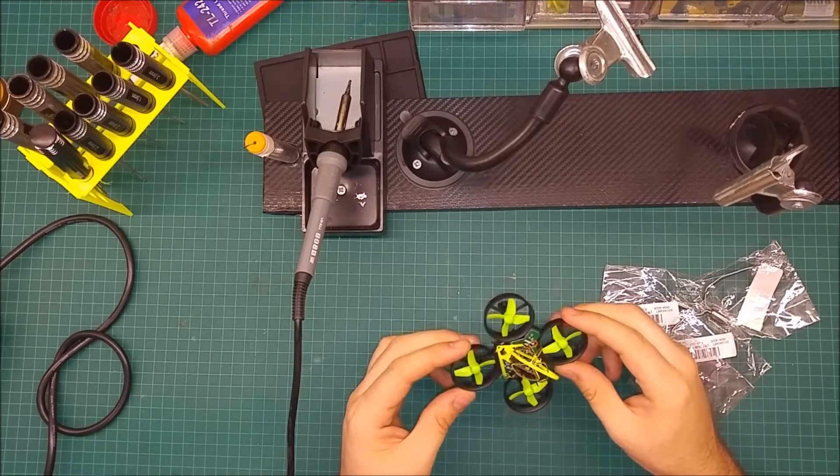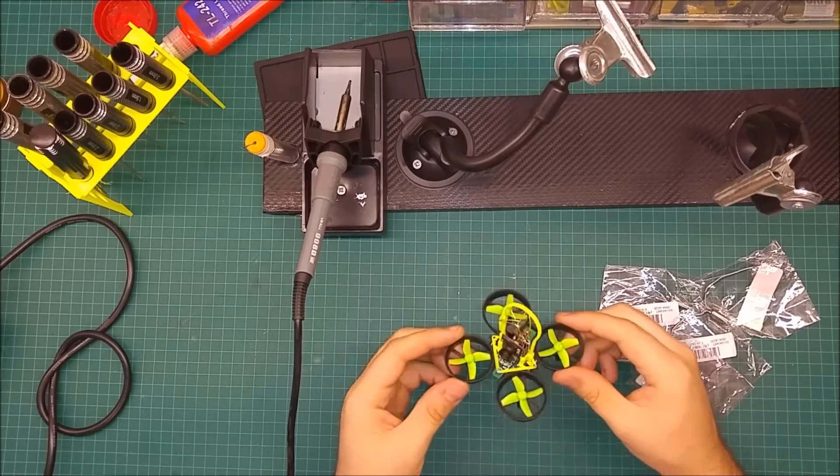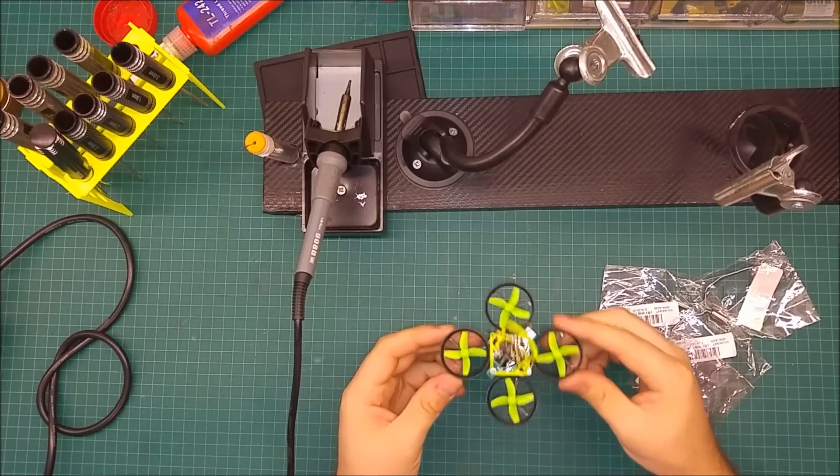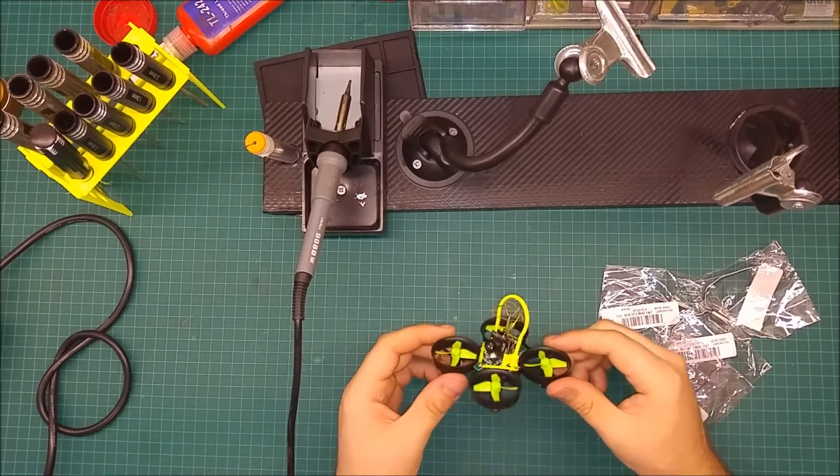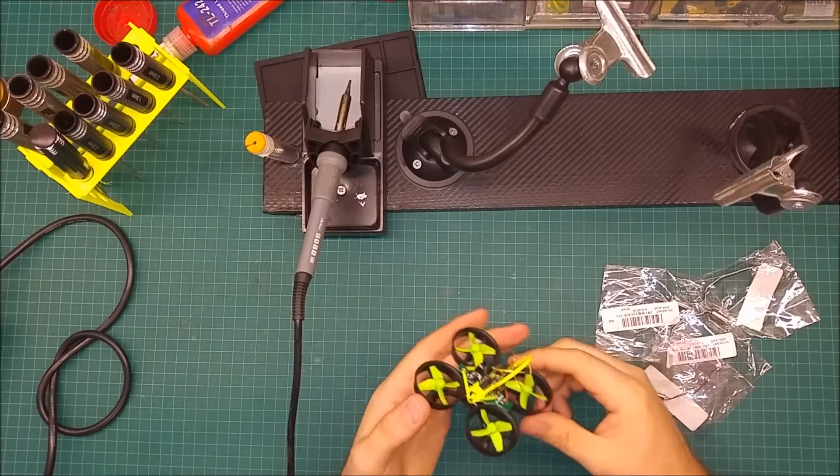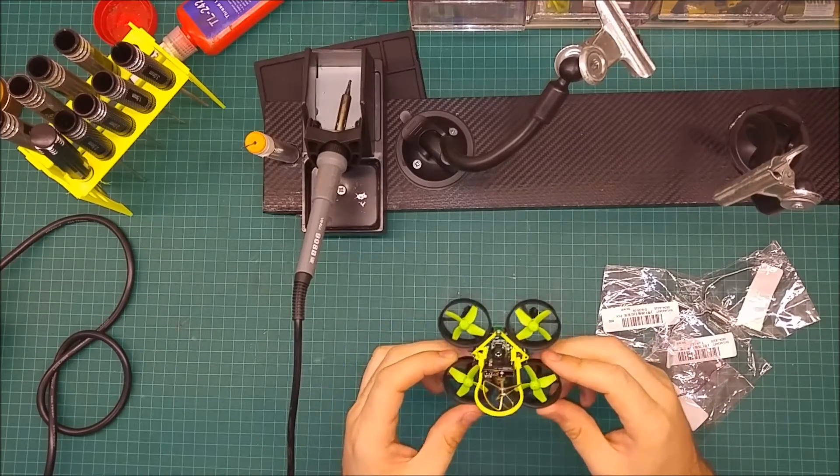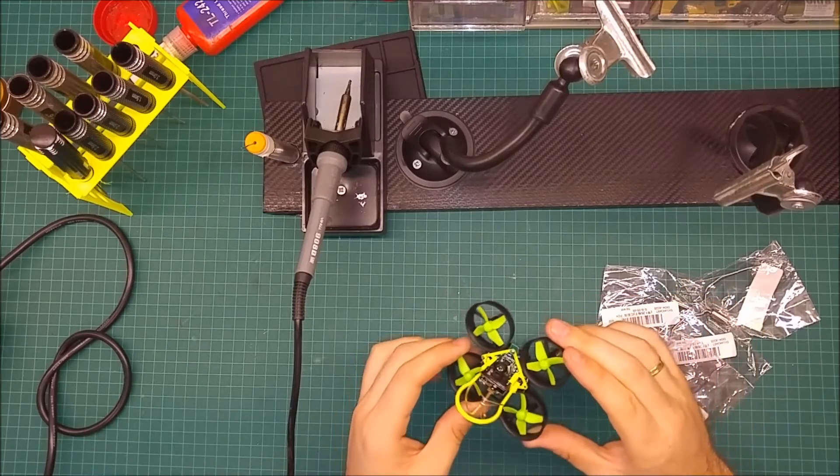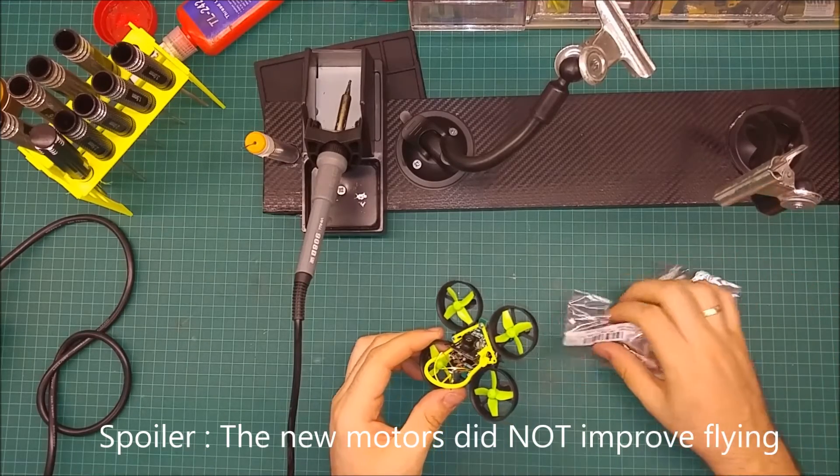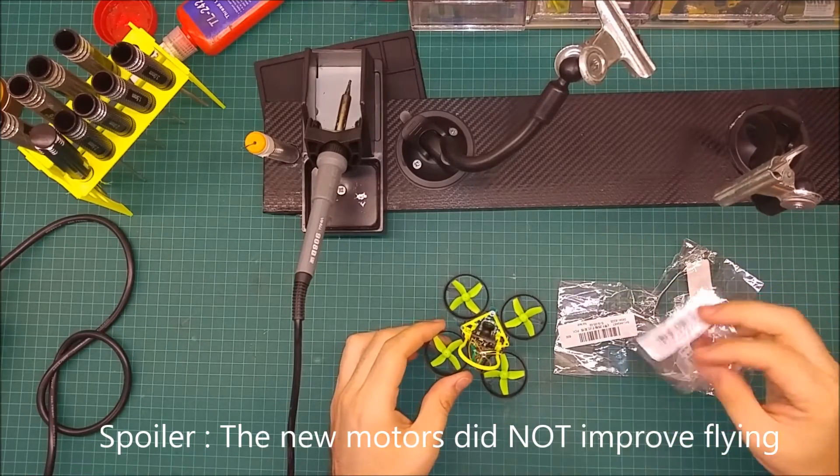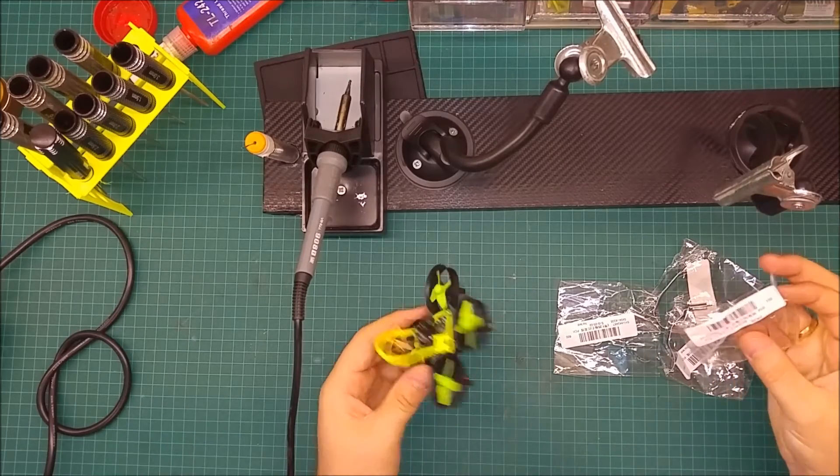It might be some different batch of quadcopter, maybe you got a defective one. But most of them do fly with FPV camera with the stock motors. It's not the perfect flying, so I have the motors, so I'm gonna upgrade anyway. Let's get to it.